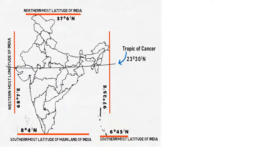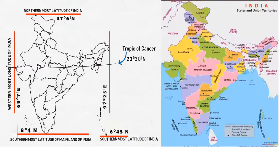Map items you should learn in this lesson include all the major latitudes and longitudes of India. You should also be able to identify, locate, and label all the states and union territories of India with their capital cities. Hope you are benefited by this lesson. See you again.